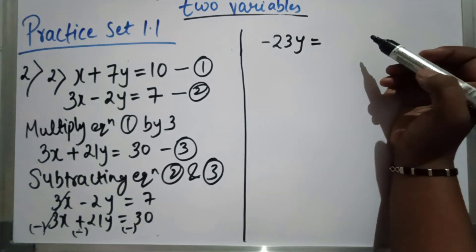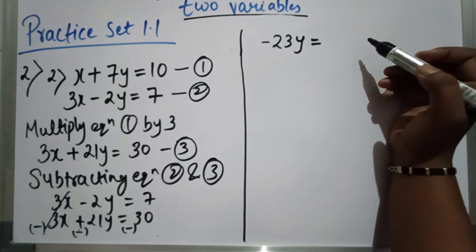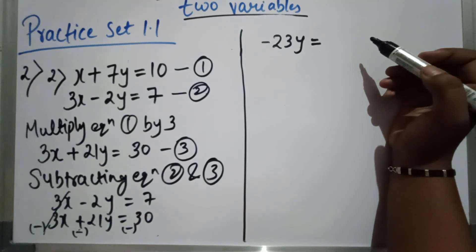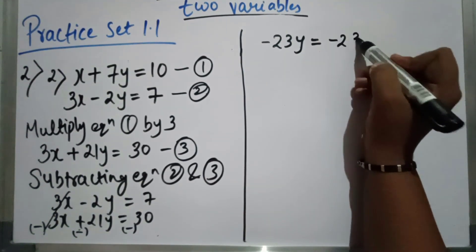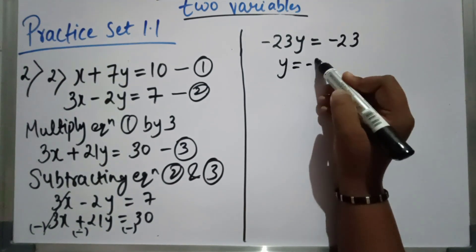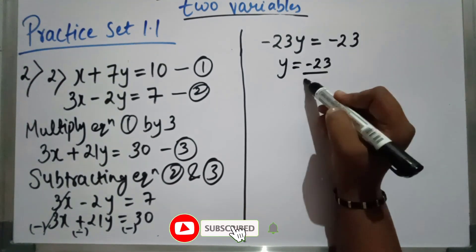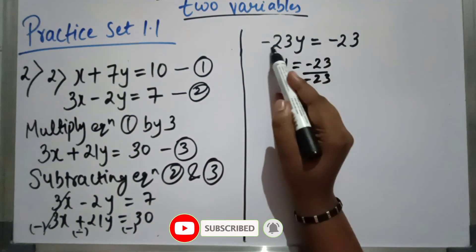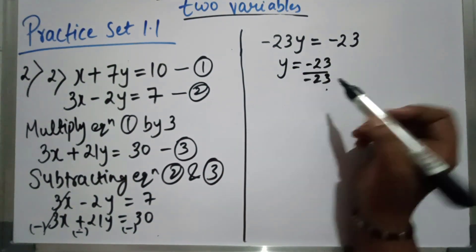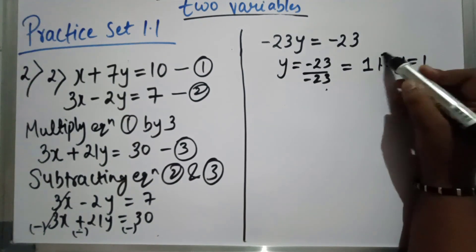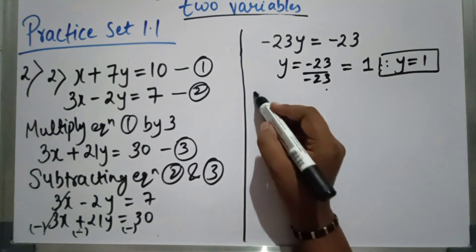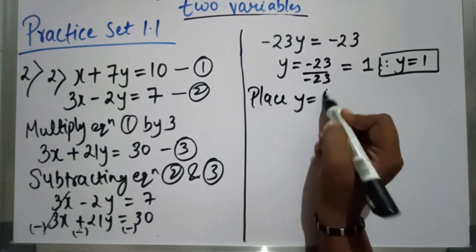7 minus 30: plus 7 minus 30, minus is minus, so 30 and 7 gives minus 23. Therefore minus 23y equal to minus 23, which gives y equal to 1.